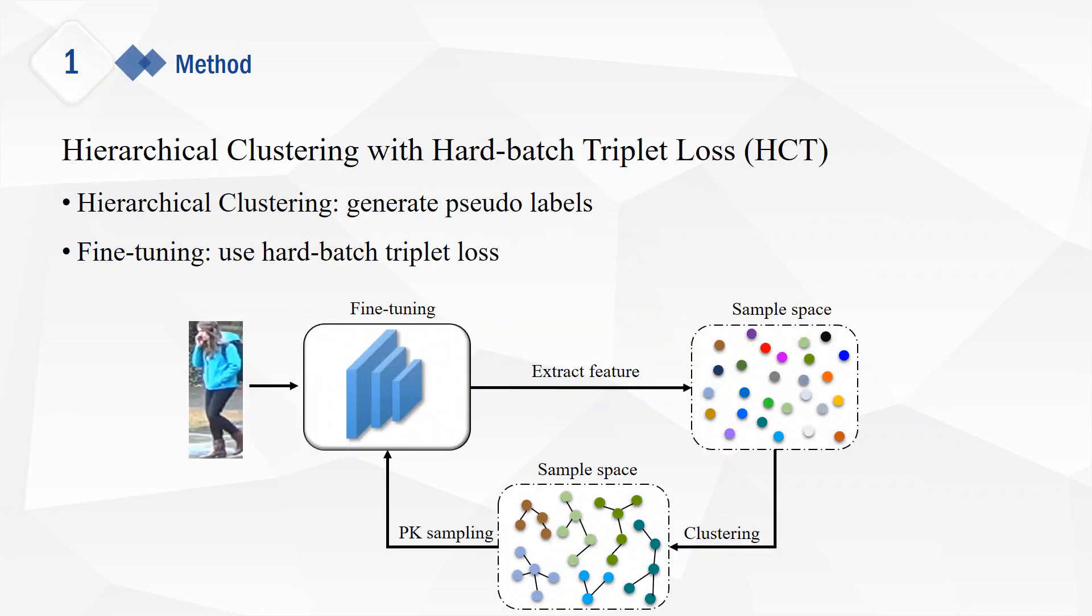We combine hierarchical clustering with hard-batch triplet loss to propose a fully unsupervised method for person re-identification. Specifically, we use hierarchical clustering to generate pseudo-labels and fine-tune the model with these labels using hard-batch triplet loss.